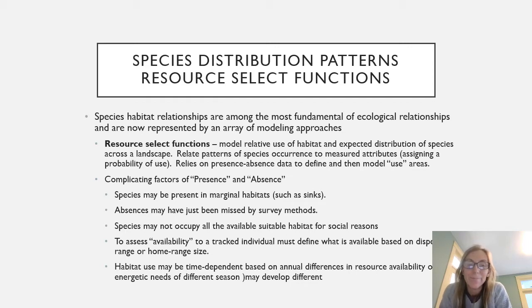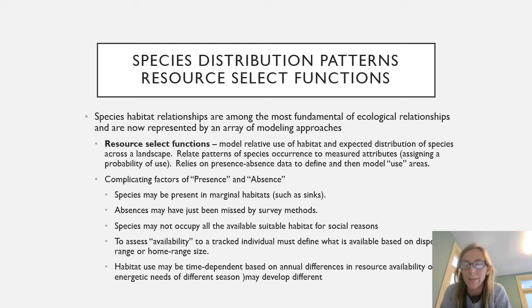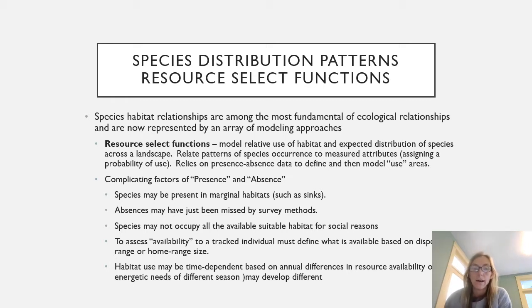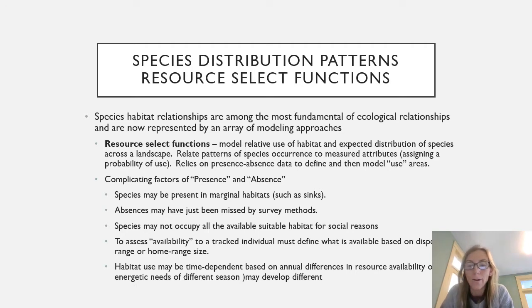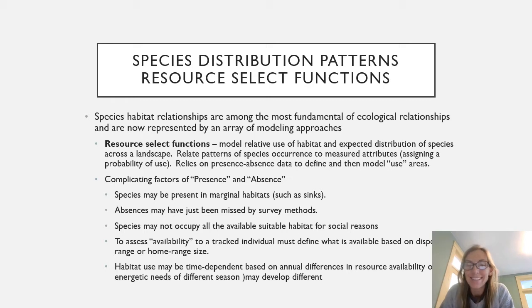To assess habitat availability for an individual, we must define what is available based on how those individuals move — their dispersal range or home range size. Habitat use may also be time-dependent based on annual differences in how organisms move and what resources are available, so analyses may need to account for seasonality as well.